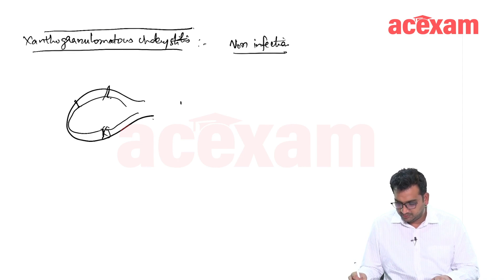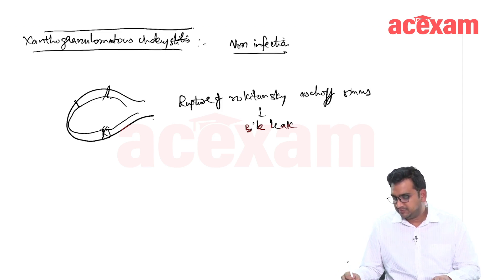Whenever there is rupture of Rokitansky-Aschoff sinuses, then there is bile leak in the wall and this bile leak leads to a collection and there is increased thickness of the wall and there is development of Xanthogranulomatous cholecystitis.